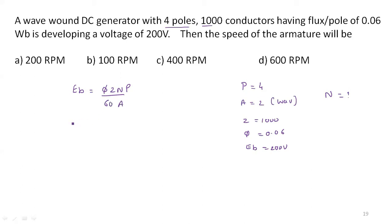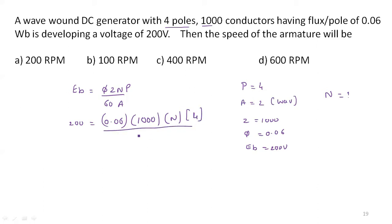Back EMF is 200 volts, φ = 0.06, Z = 1000, speed we have to find. Number of poles equals 4, divided by 60 into A. For wave winding, the number of parallel paths equals 2. By solving this, speed N equals 100 RPM.